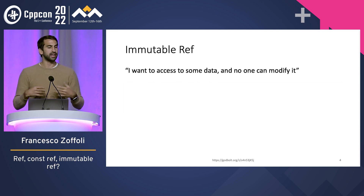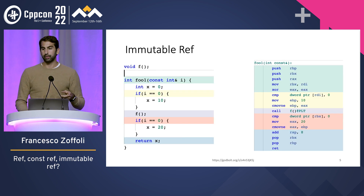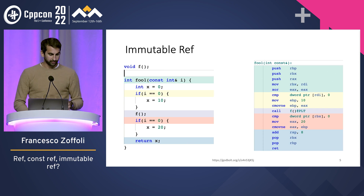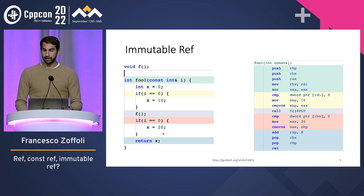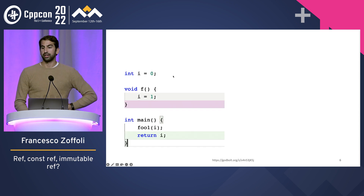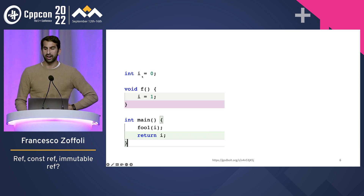And then you want to have some data and you want the others to promise not to modify it. If you use const ref, you don't have this guarantee. You can see from the code that we are accessing i, and this is generating a compare, then we are calling a function, and then we are accessing i doing the same check again. Because from f, we could actually access a global variable which is our reference, and we could be modifying it. So we cannot assume that the function is not modifying the data we have access to.